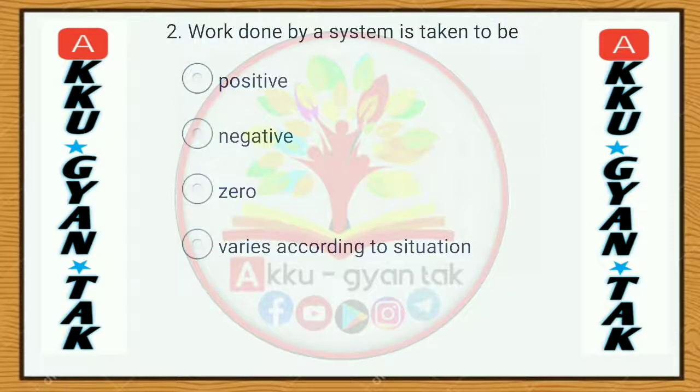Work done by a system is taken to be: a) positive, b) negative, c) zero, d) varies according to situation.